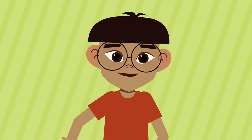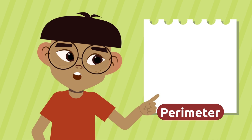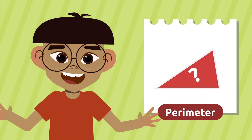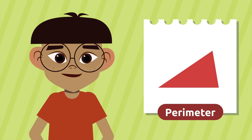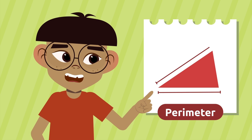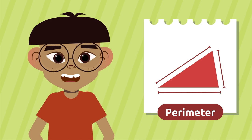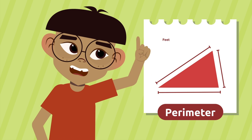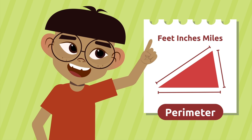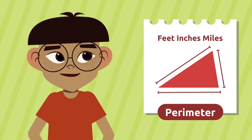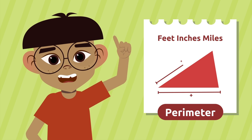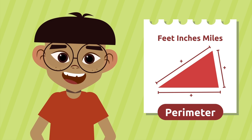Hello everyone! Today we're going to tell you how to find the perimeter of a polygon. The perimeter is the sum of the sides of a geometric figure — it's measured in feet, inches, miles, or other measuring units. To find the perimeter of a figure we should add the lengths of each one of its sides.